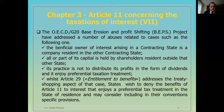The OECD G20 Base Erosion and Profit Shifting, so-called BEPS project, has addressed a number of abuses related to cases such as the following one. The beneficial owner of interest arising in a contracting state is a company resident in the other contracting state. All or part of its capital is held by shareholders resident outside that other state. Its practice is not to distribute its profits in the form of dividends, and it enjoys preferential taxation treatment. While Article 29, so-called Entitlement to Benefits, addresses the treaty shopping aspects of that case, states wish to deny the benefits of Article 11 to interest that enjoys a preferential tax treatment in the state of residence, and may consider including in their Convention specific provisions.